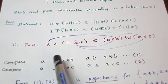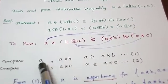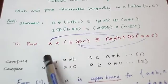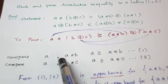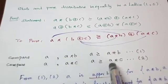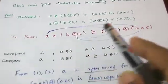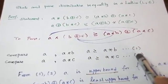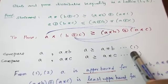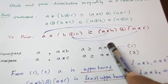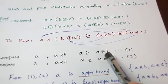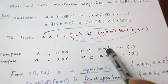First, compare A and A★B. A★B is smaller than A. Similarly, compare A and A★C — A★C is smaller than A. So we have two inequalities, and from these two we ascertain that A is an upper bound for the two elements A★B and A★C.